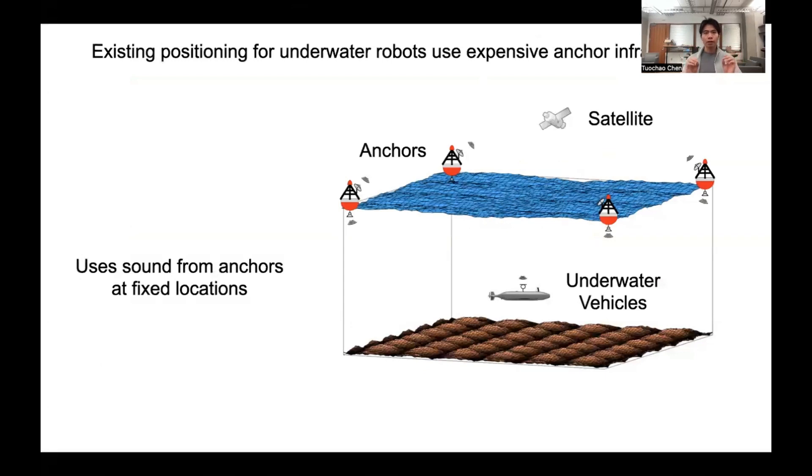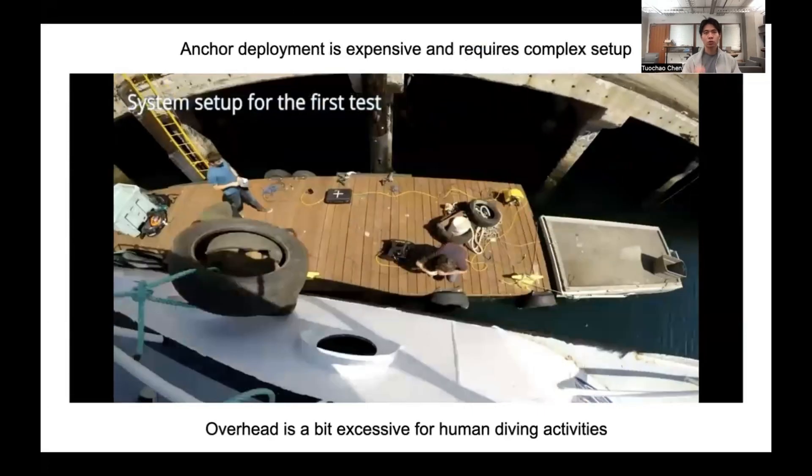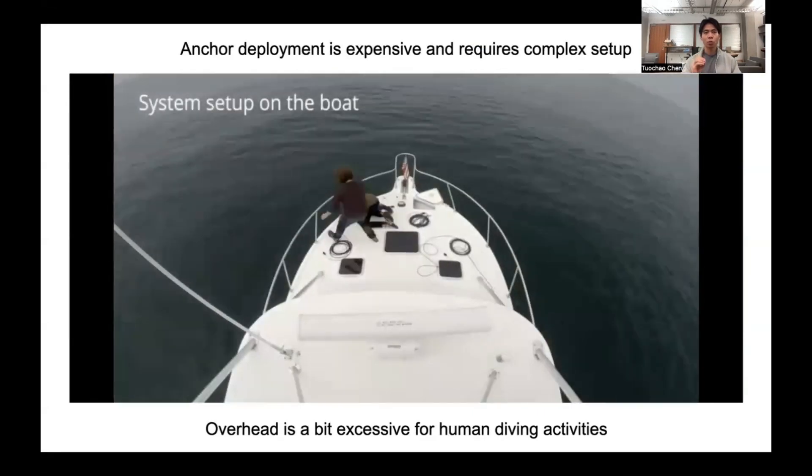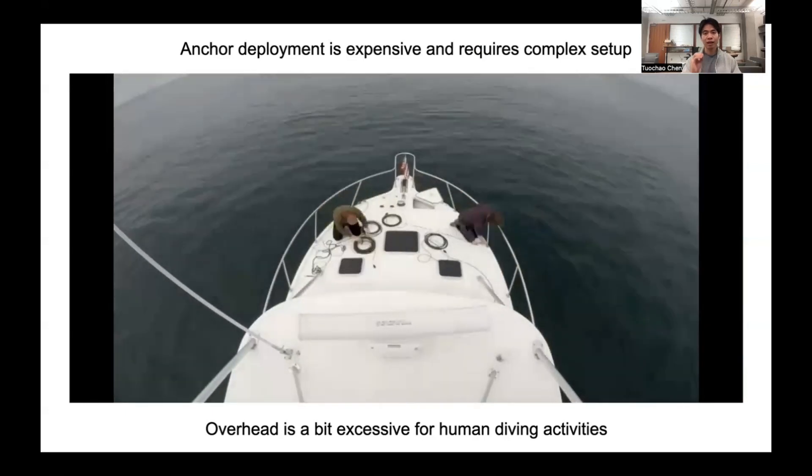Let's take a look at how typical positioning for underwater robots works. It turns out they use a dedicated and expensive anchor infrastructure. These anchors use sound to localize and are deployed in fixed locations, which can be used to triangulate the position of underwater robots. However, as you can see here, the anchor-based system requires a complex setup, which is a bit excessive for diving activity.